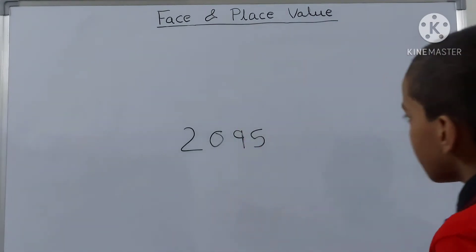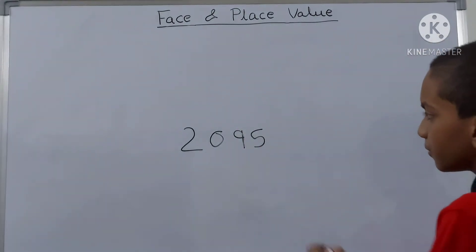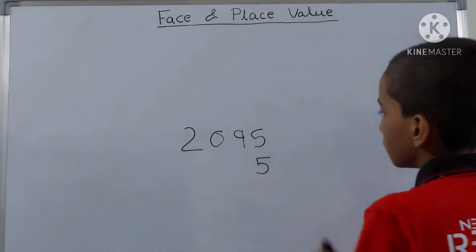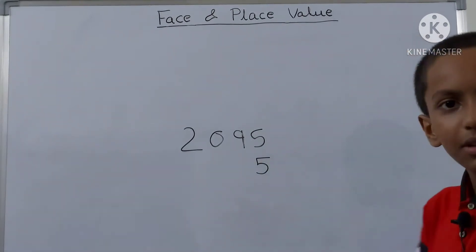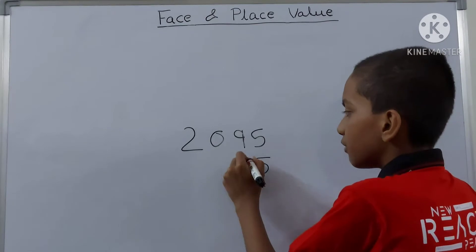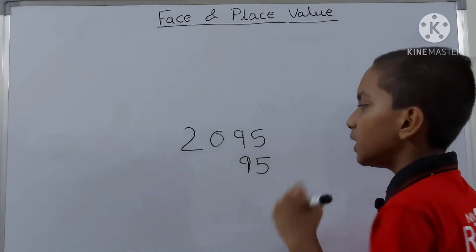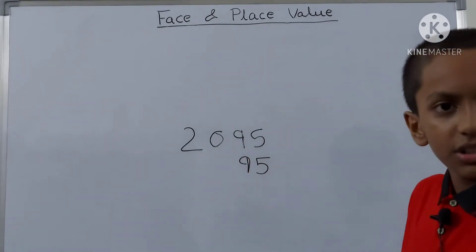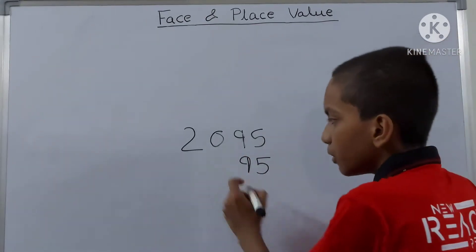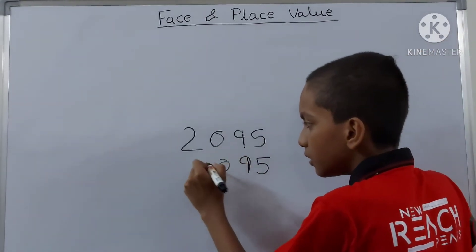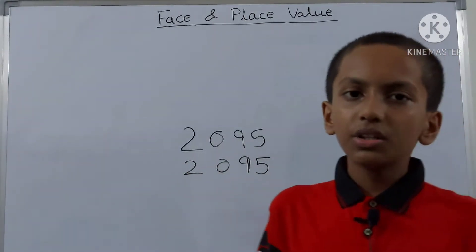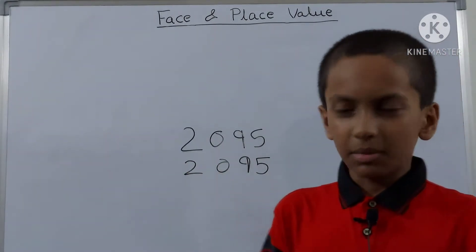So you see 5 is here, so 5 will be 5 only — nothing will change. 9 is there, so it will be 9 only. 0 is there, it is 0 only. Then 2 here — so the face value is always the same.